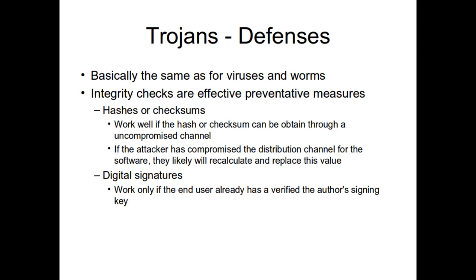Defenses against Trojans are basically the same — all the defenses for viruses and worms are good. Integrity checks are especially good for Trojans. Hashes and checksums are really good because if you download software and there's a hash checksum obtained from a different channel, you can verify the software has not been modified. Even better is using a digital signature — as long as you can trust the author's signing key, you can be fairly certain it hasn't been tampered with.